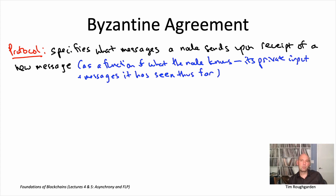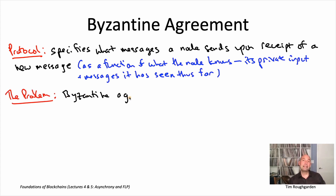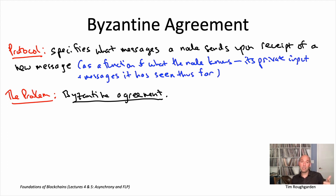The FLP impossibility result is normally stated for what's called the Byzantine agreement problem. This is going to be the third notion of consensus we've seen. We started with state machine replication (SMR), which is multi-shot consensus, then talked about Byzantine broadcast, a single-shot consensus problem. Byzantine agreement is another slightly different single-shot consensus problem.